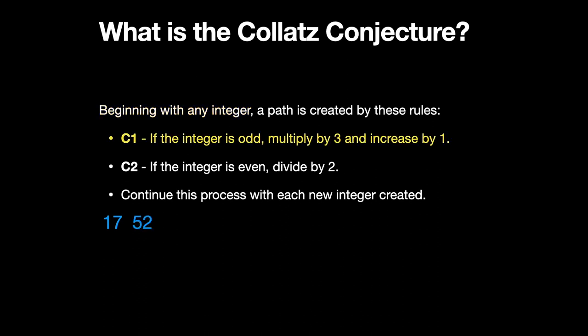Rule C1: if the integer is odd, multiply by 3 and increase by 1. Rule C2: if the integer is even, divide by 2. Continue this process with each new integer created.